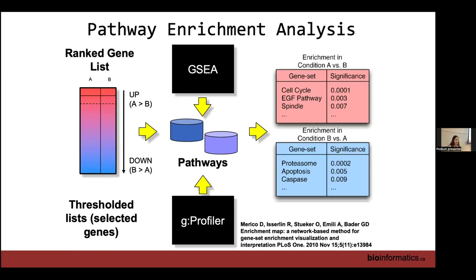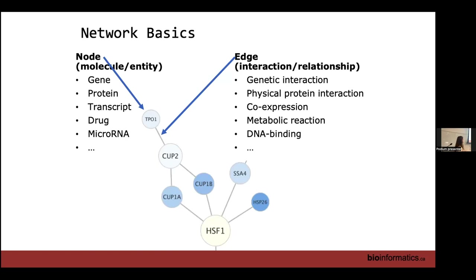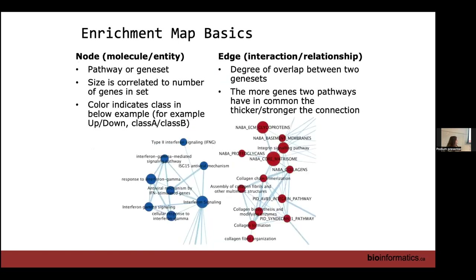In general, we start with experimental data as either a rank file or a thresholded list, run it through pathways to find enrichment, and the results are a table with enrichment scores for each pathway. With both gProfiler and GSEA we can generate two different subsets — or more — such as condition A vs. condition B, or upregulated vs. downregulated. We've run pathway analysis and generated enrichment results, but those results are tables of pathways not individual genes.